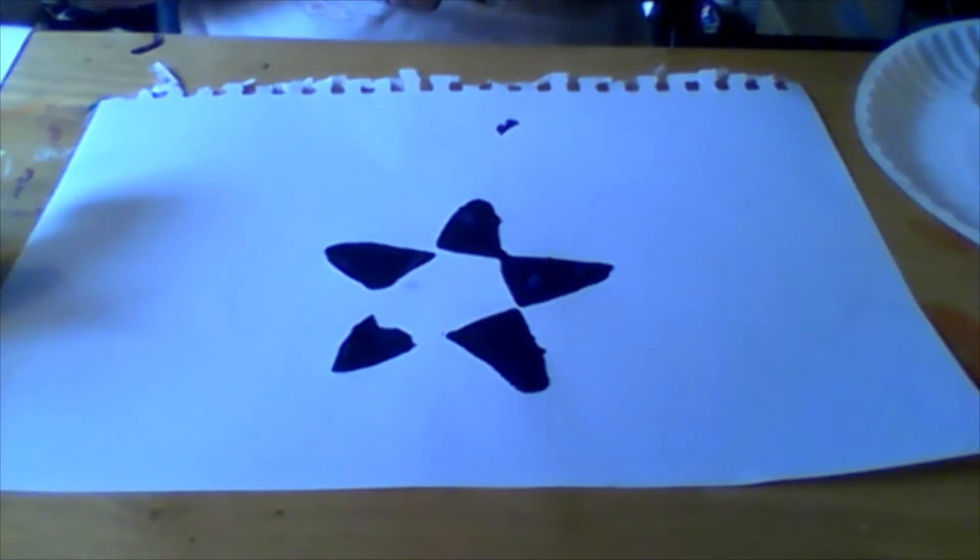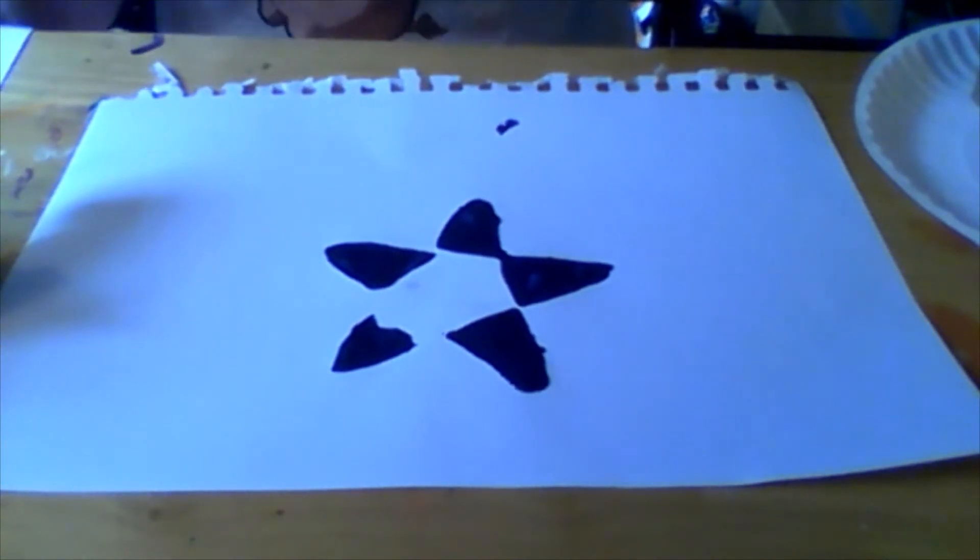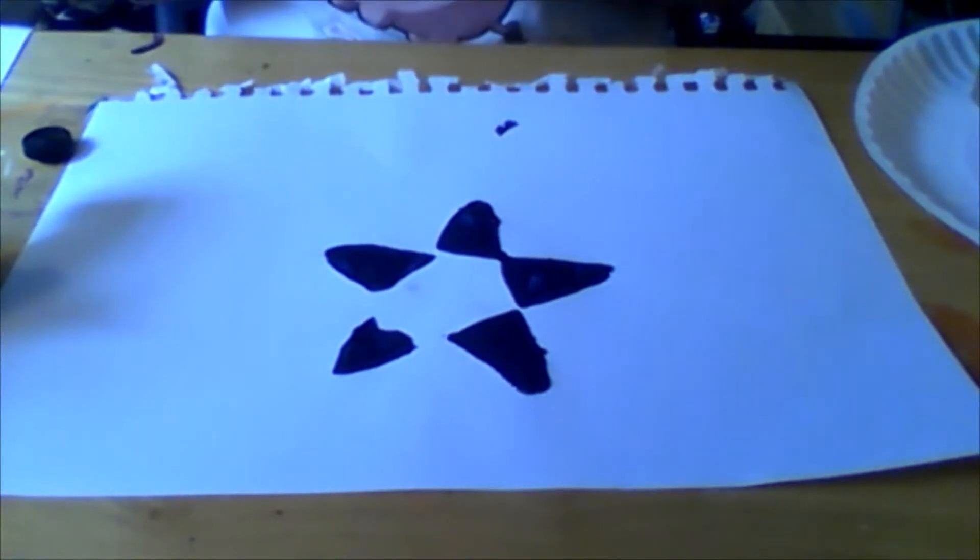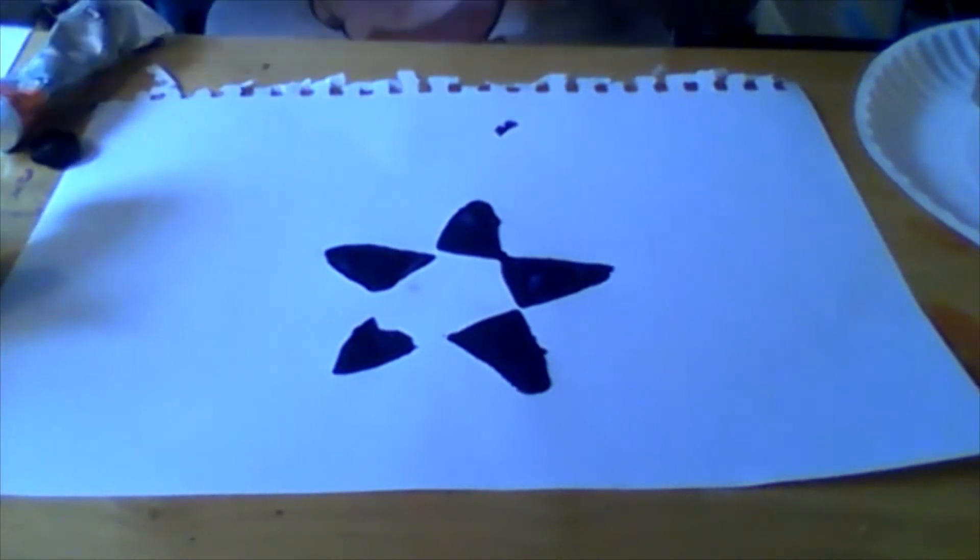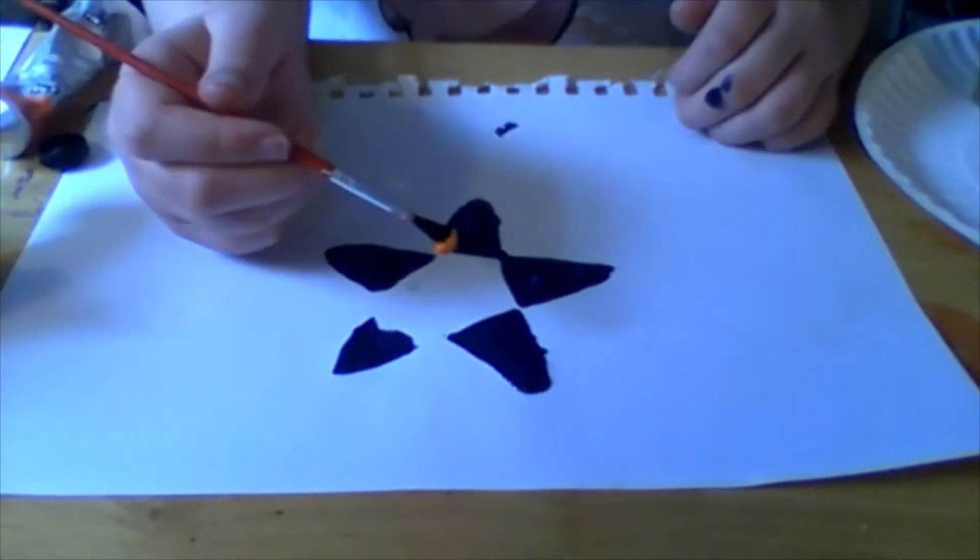Now you want to take your paintbrush and add a little bit of orange paint to it, so we can make the middle of the flower.